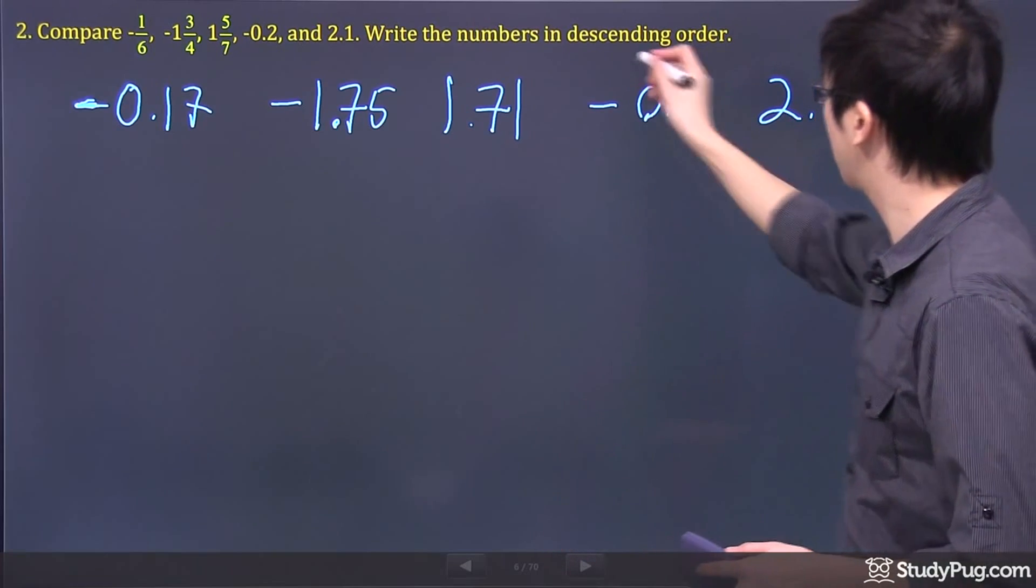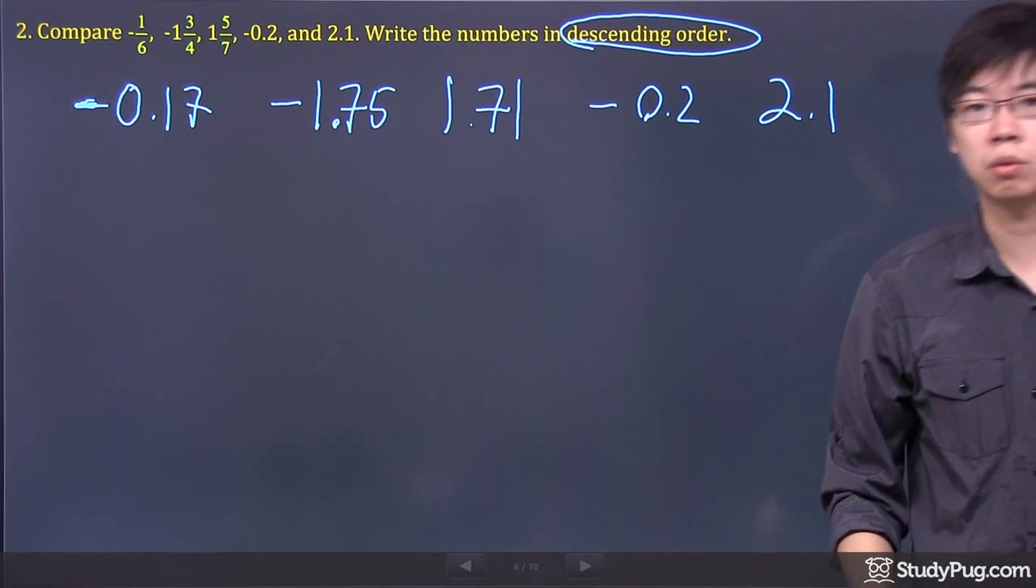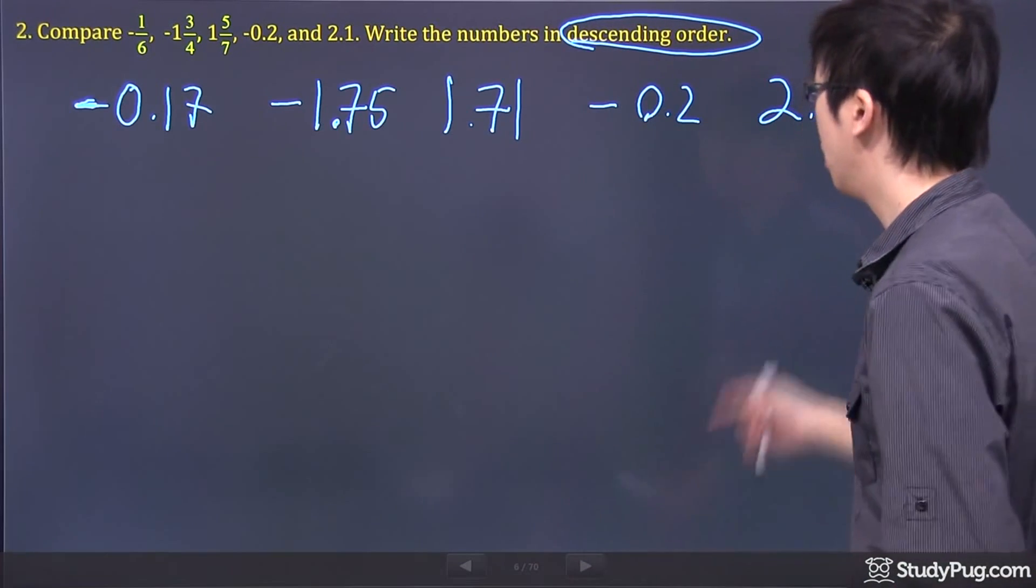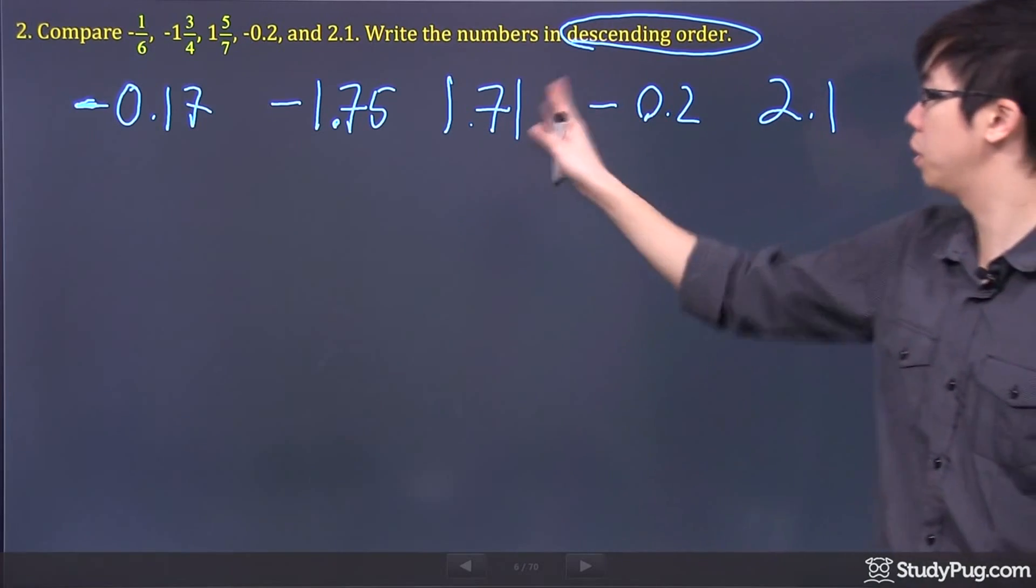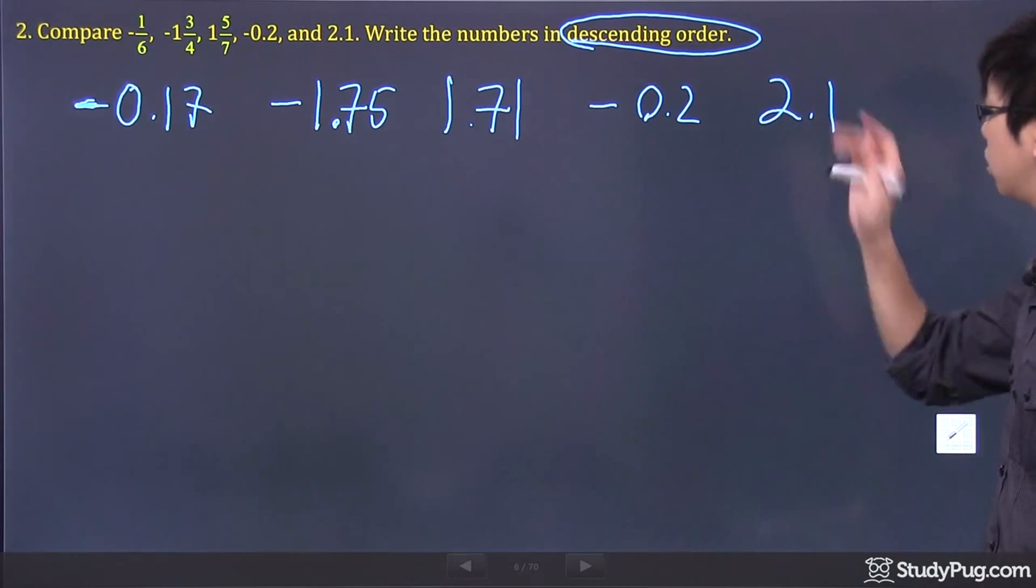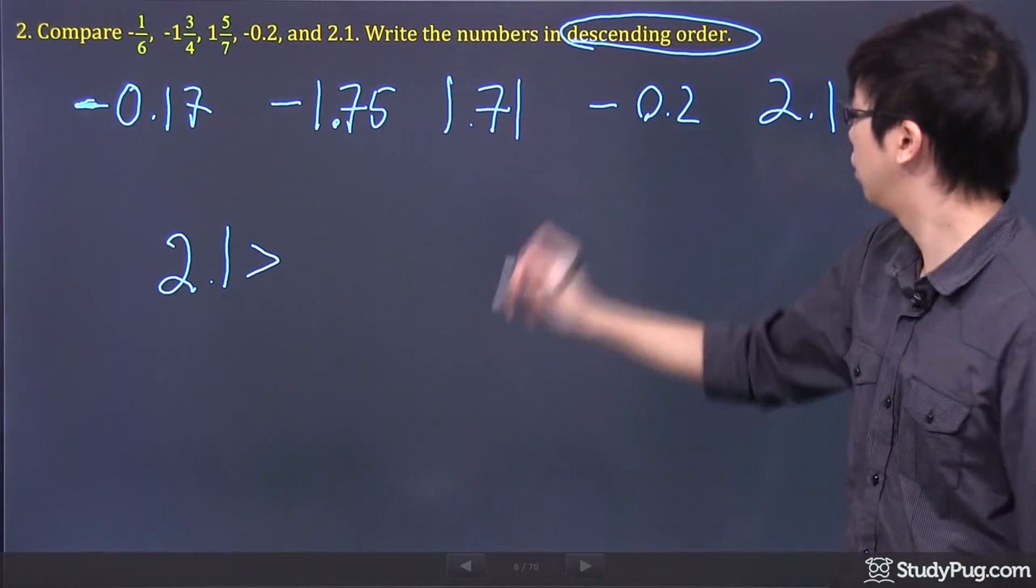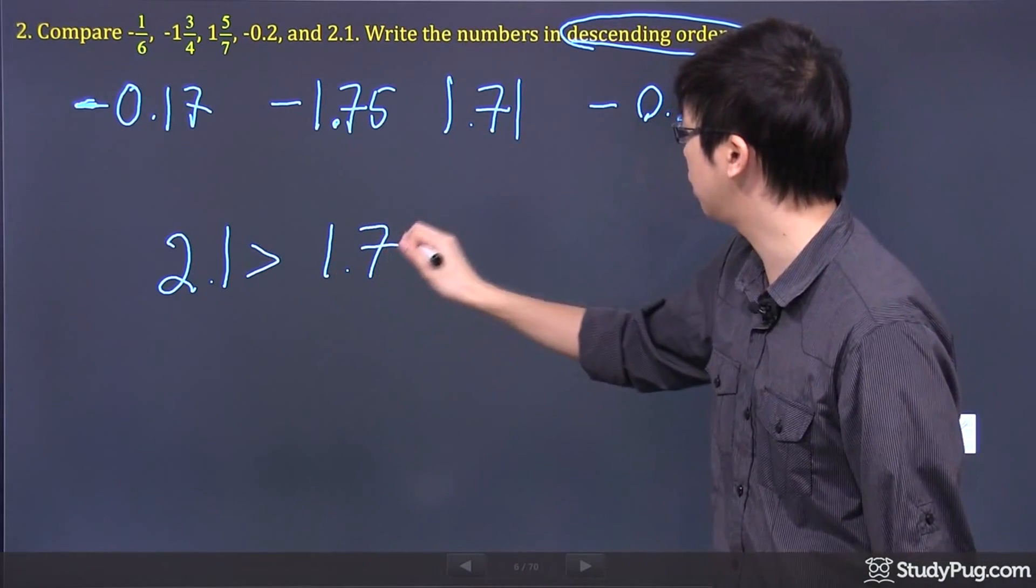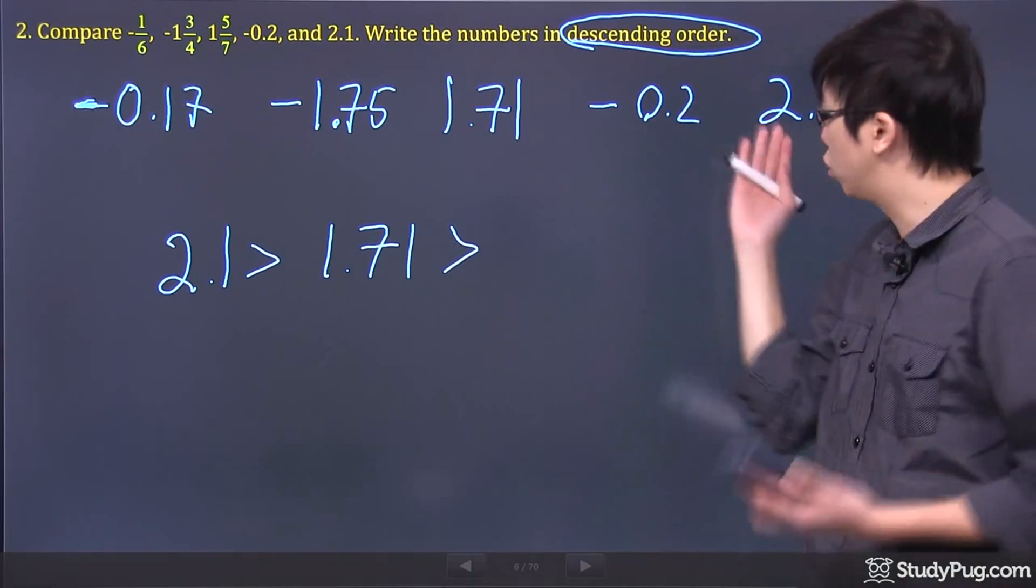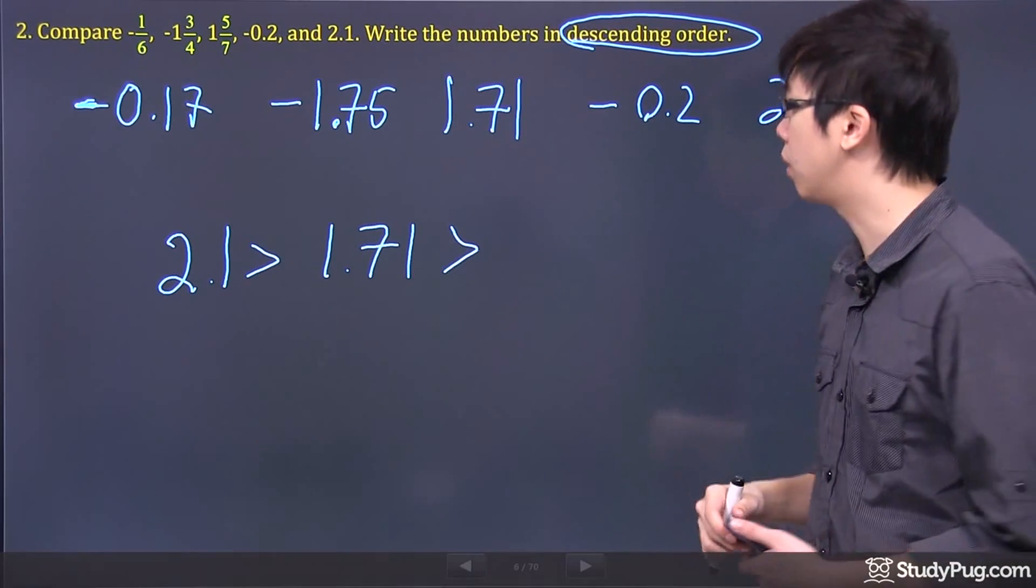Looking at the numbers, we're trying to go in descending order, so pick the biggest one first. Looking across, of course, we're going to pick the positive to be the biggest. It's 2.1 first. So we've got 2.1 greater than 1.71 because these two are the only positive numbers we have.